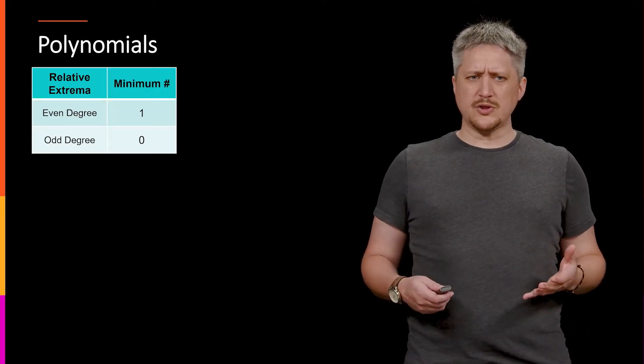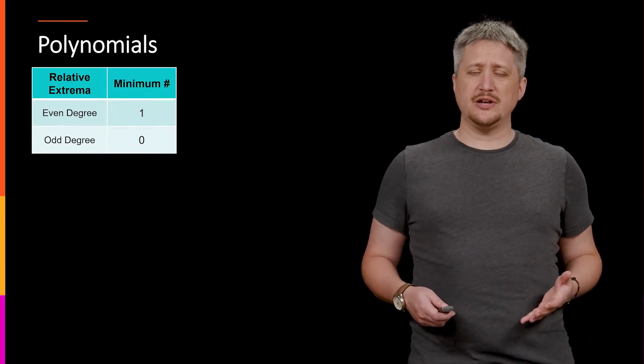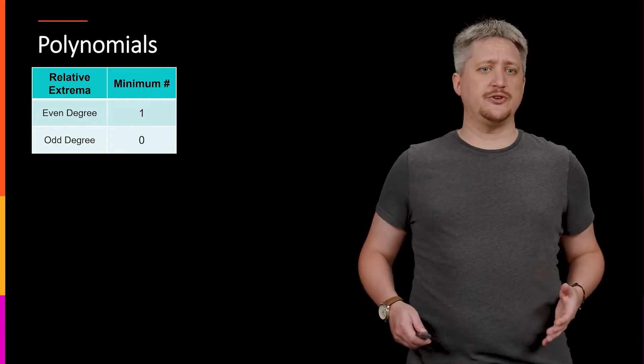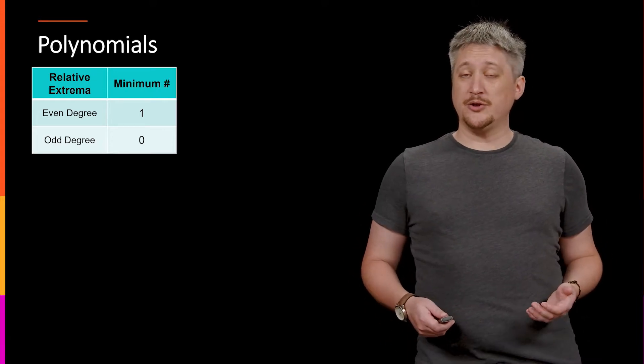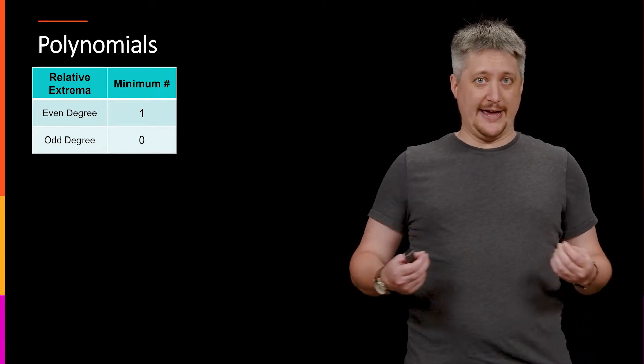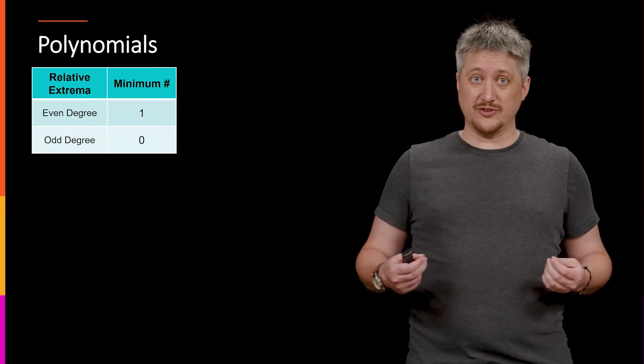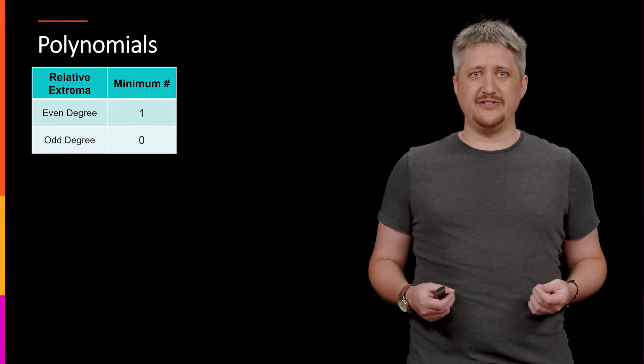So recall, we do know a little bit about extrema and polynomials. In particular, if we have an even degree polynomial, we know it has to have an absolute extrema somewhere, whereas odd ones definitely do not.